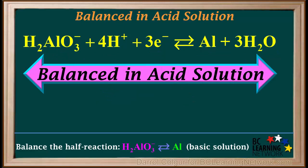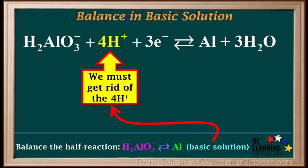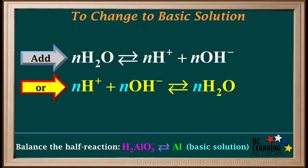This half reaction is now balanced in acid solution. But the question asks us to balance this in basic solution. For basic solution, we must get rid of the 4H⁺, since equations in basic solution cannot have H⁺ ions in them. In order to convert from acid to basic solution, we add either the equation showing water forming H⁺ and OH⁻, or its reverse showing H⁺ and OH⁻ forming water — whichever we need to cancel H⁺ ions out of our acid solution equation.